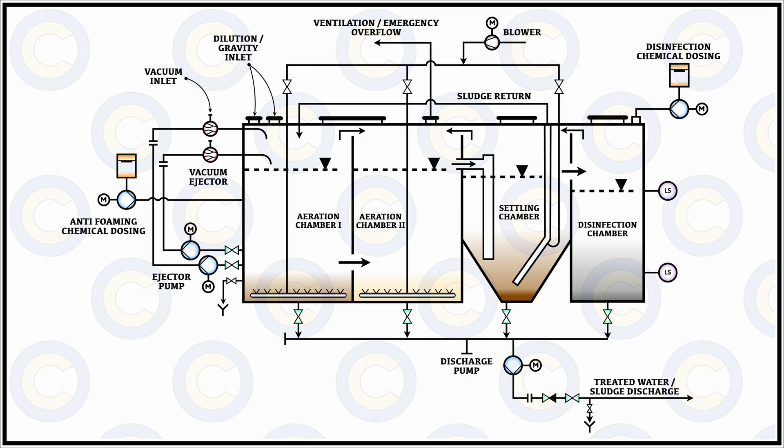Once the vacuum is maintained, as a virtue of vacuum and gravity both, the waste comes either through the vacuum inlet line or from the grey water side via gravity. All this waste from vacuum inlet and gravity inlet goes into aeration chamber number one, and from there it continues the same treatment and disposal method.